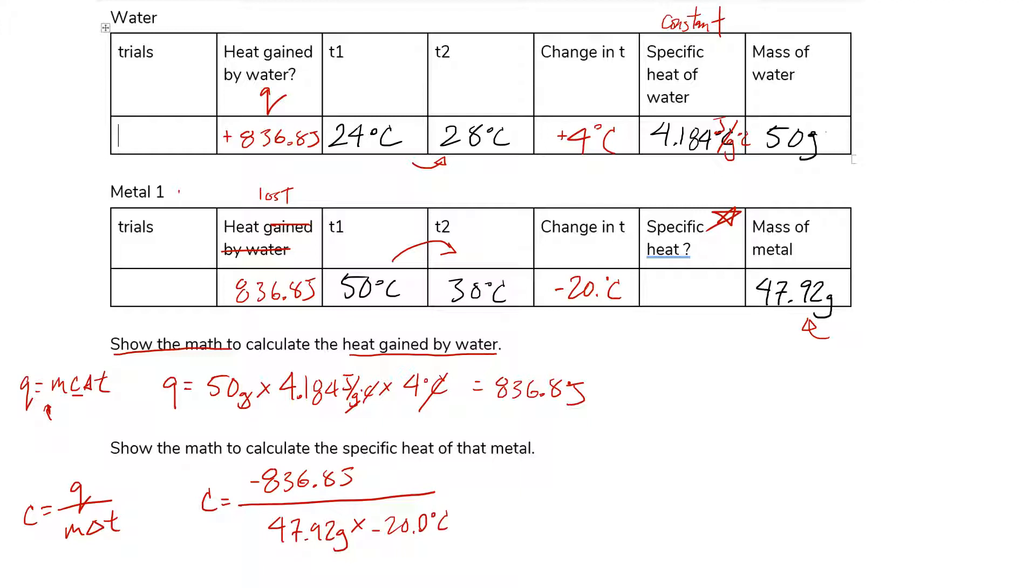These two negatives cancel out. So my specific heat is 0.873 joules per gram Celsius.